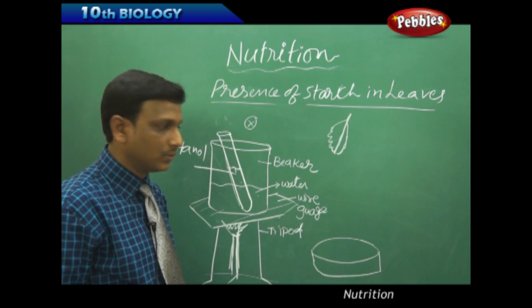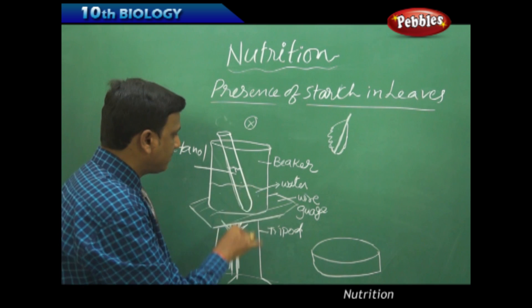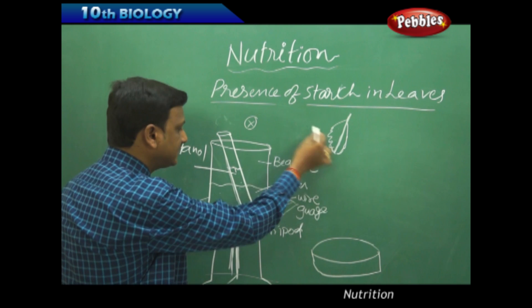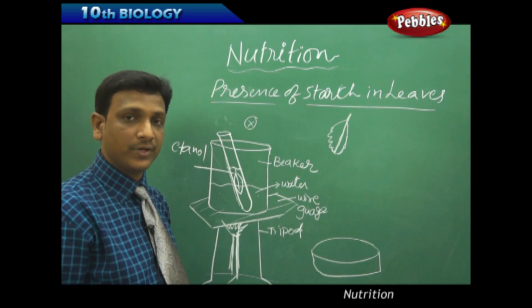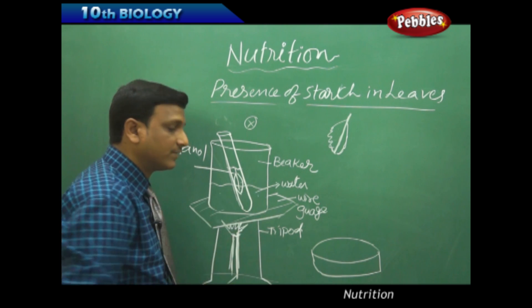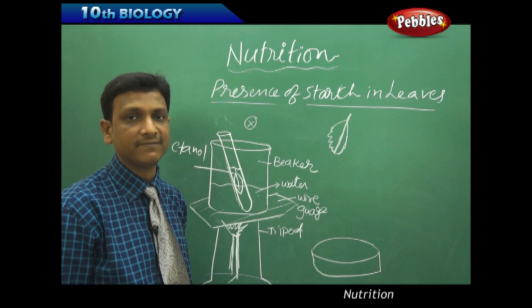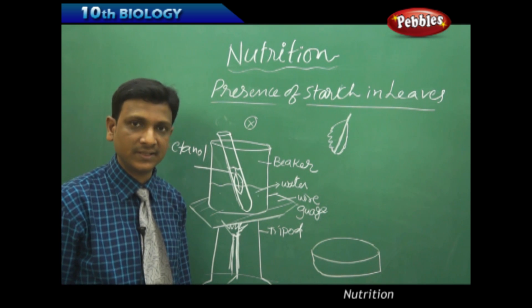So what can we do? We have taken a water bath, that is a beaker with water. In the beaker, we carefully place a test tube with ethanol and we are going to place this leaf in this beaker. We are going to boil this content for some time. Depends upon the size of the leaf, type of the leaf. Some leaves take 10 minutes, some take 5 minutes.